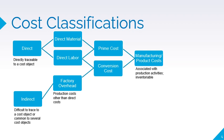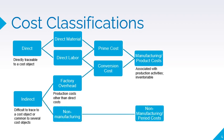Manufacturing costs are also referred to as product costs since they are capitalized as inventory. Non-manufacturing costs, on the other hand, are those that are incurred in relation to the selling and administrative functions. Unlike manufacturing costs, non-manufacturing costs are expensed outright.